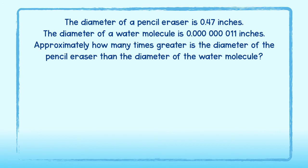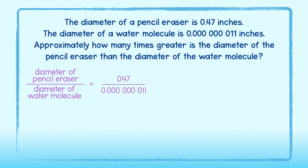Okay, to determine how many times greater something is, we will divide. In this case, we divide the diameter of the pencil eraser by the diameter of the water molecule. This is 47 hundredths divided by 11 billionths. When approximated, we get 5 tenths divided by 1 ten millionth. We can write this as 5 times 10 to the negative 1st divided by 1 times 10 to the negative 8th.